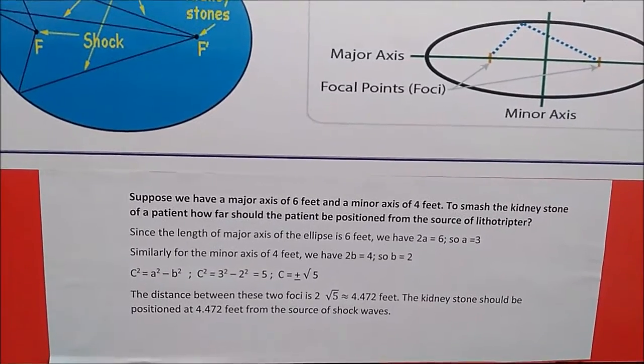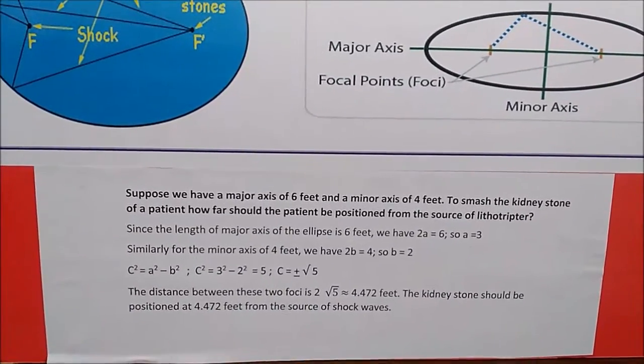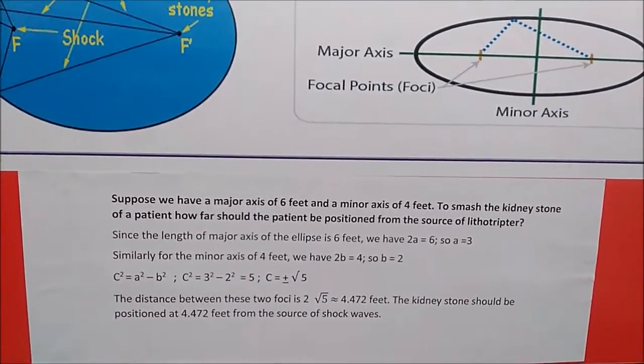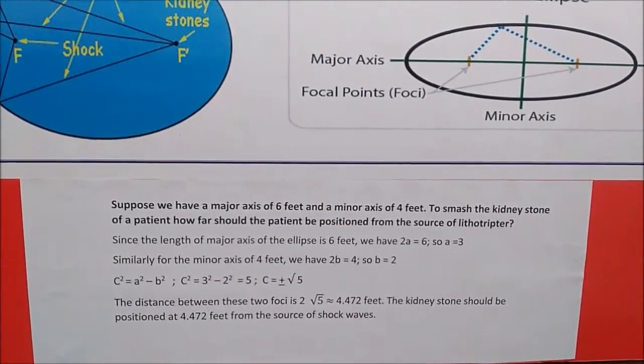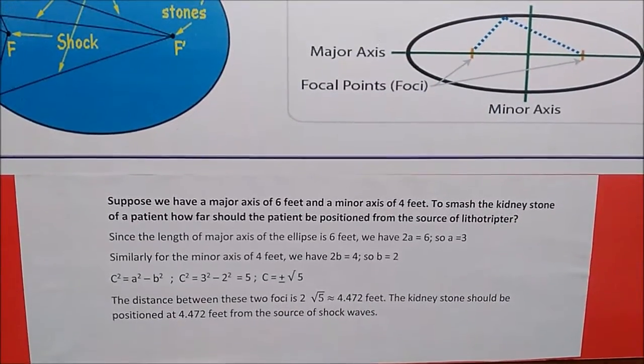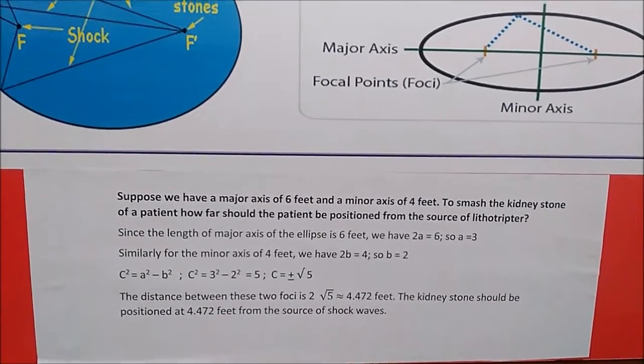The question is, suppose we have a major axis of 6 feet and a minor axis of 4 feet. To smash the kidney stone of a patient, how far should the patient be positioned from the source of the lithotripsy? Let us see the answer.